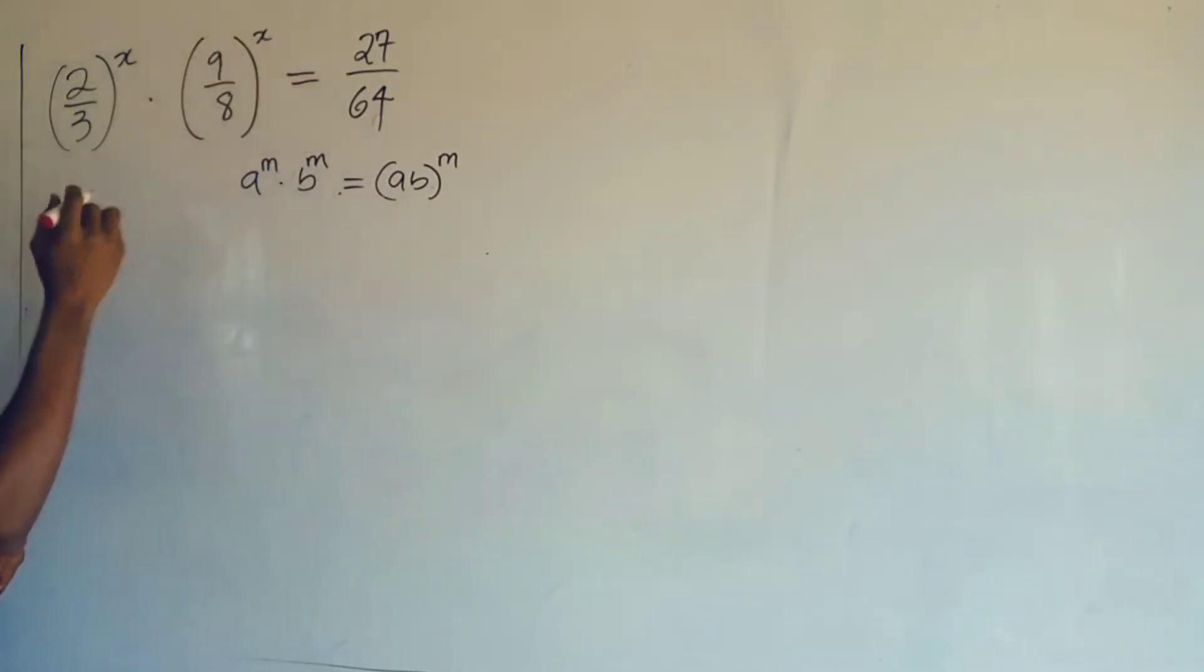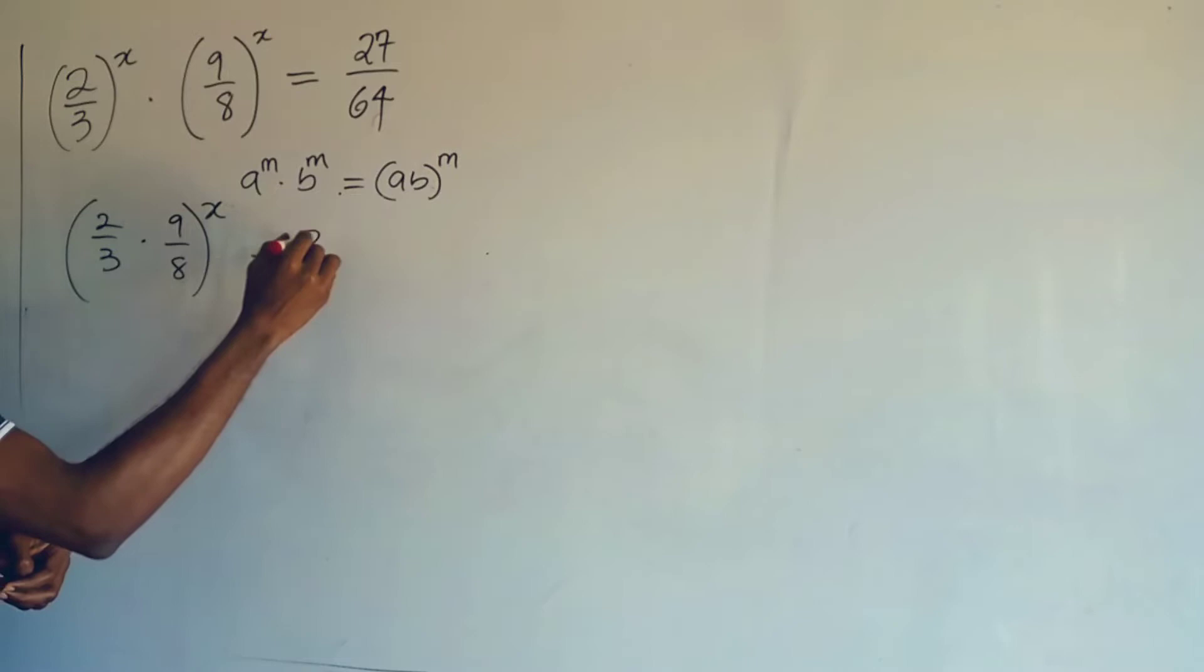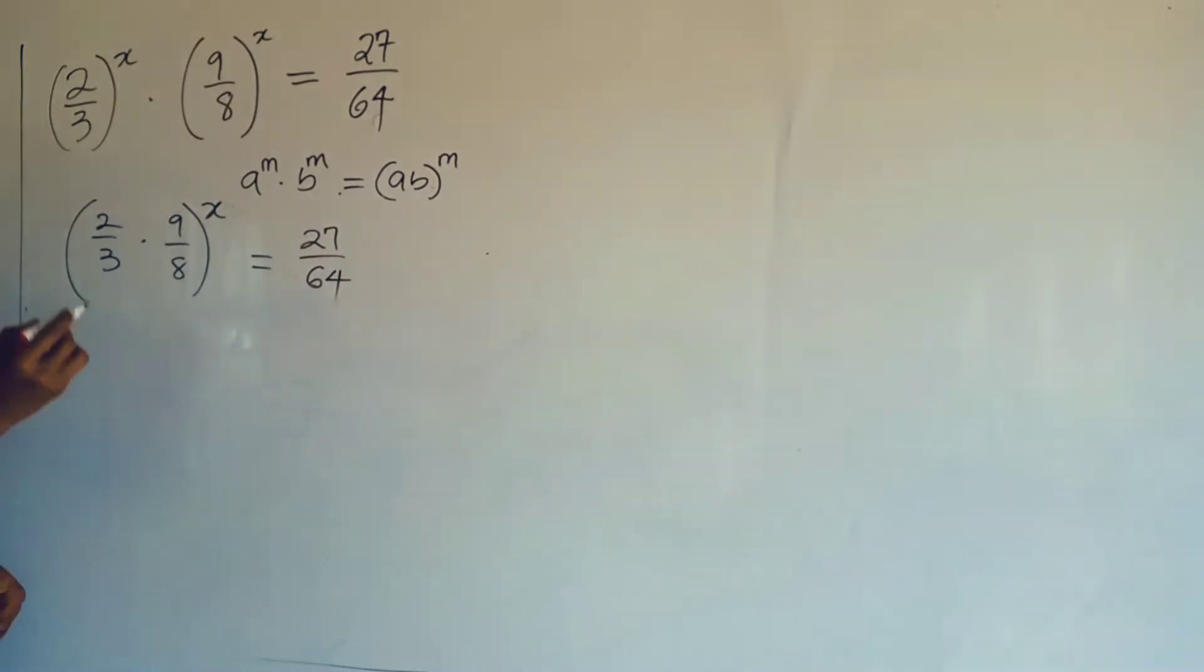So with this law, these terms become (2/3) × (9/8) all to the power x, equals 27/64. From here, simplifying the fractions, I have (3/4)^x equals 27/64.